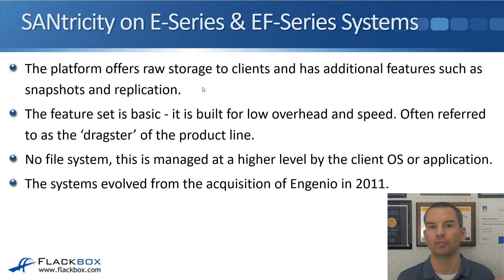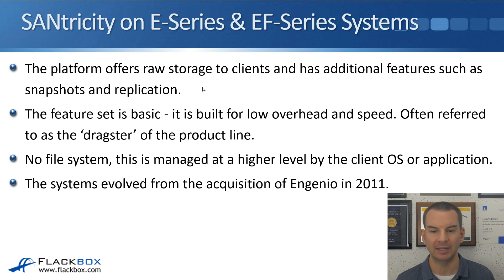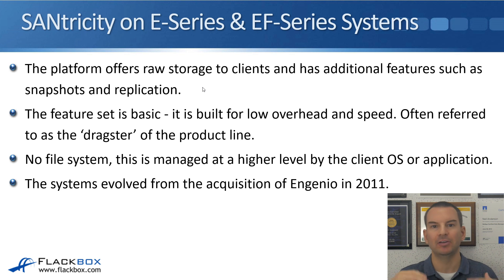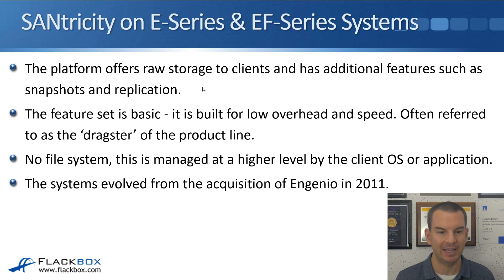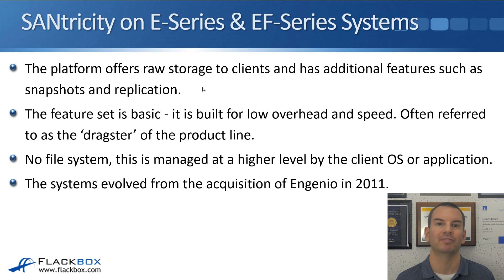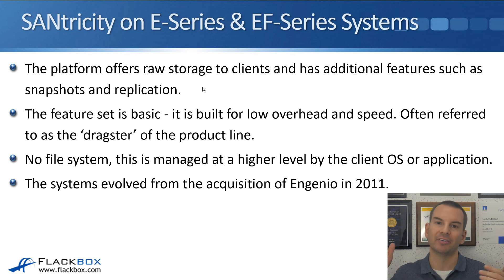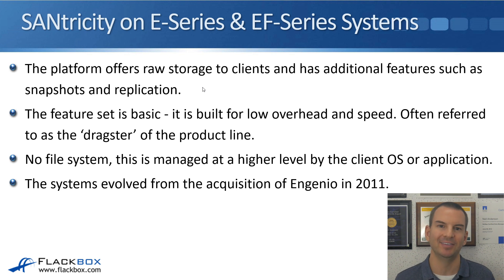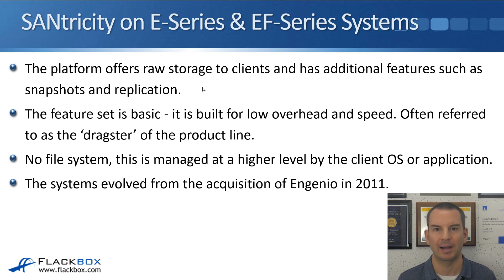The Centricity systems are built for low overhead and a lot of speed. Where the ONTAP systems support varied workloads and lots of different features and are known as the Swiss Army knife, the Centricity systems are referred to as the dragster of the NetApp storage portfolio — meaning they're very fast, but you don't get the airbags and the air conditioning, so you don't get all the features like you do with ONTAP.